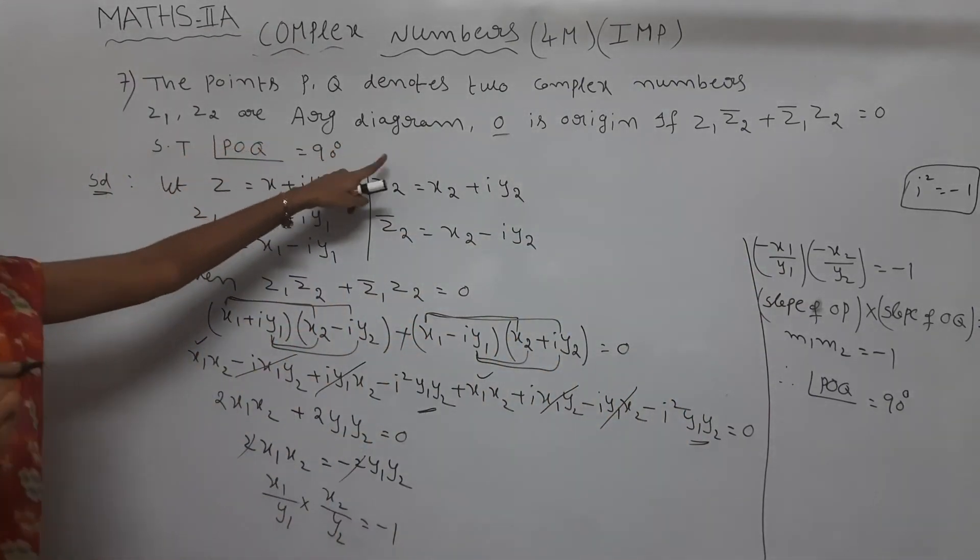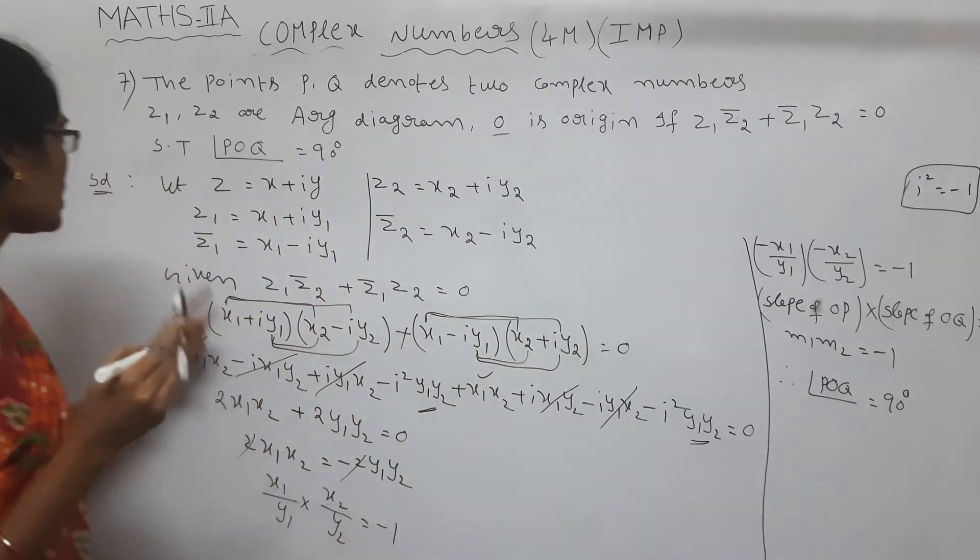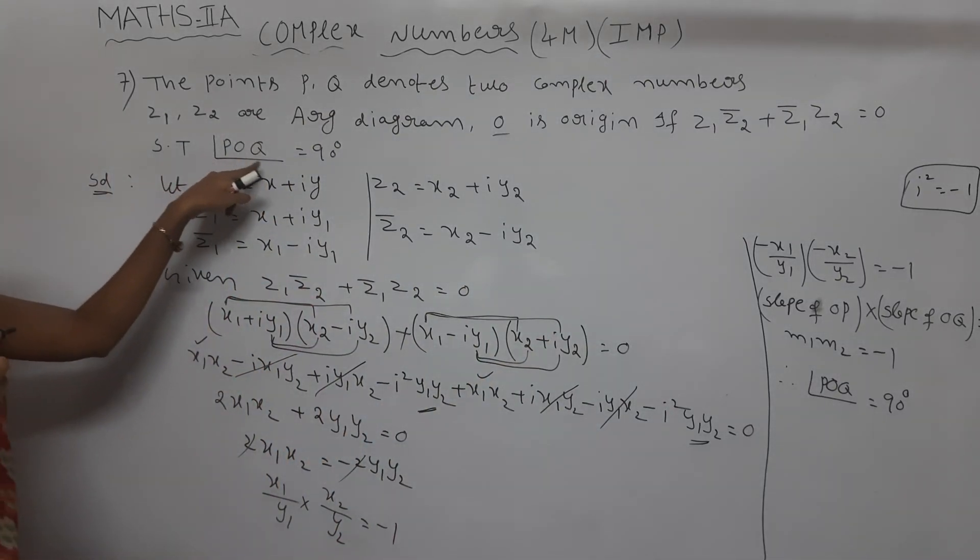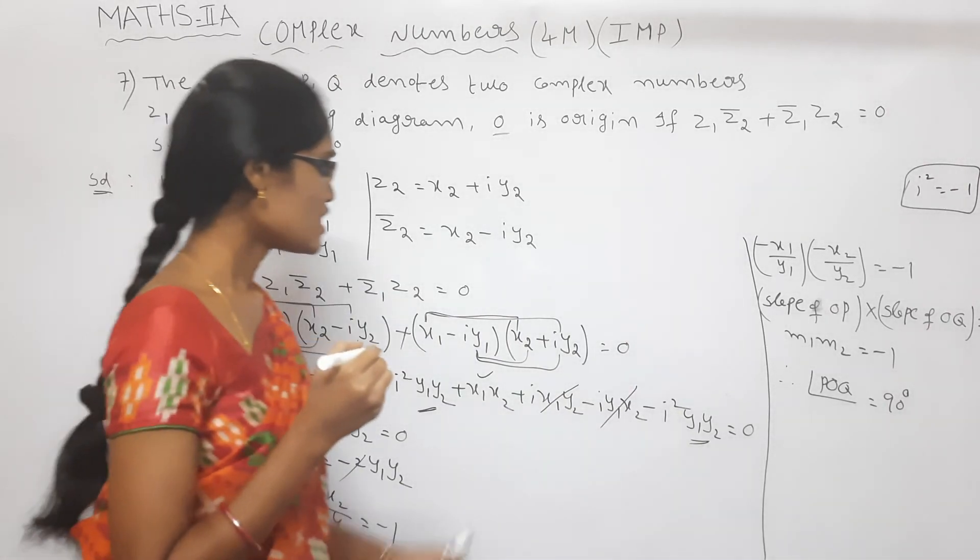Therefore, Z1 and Z2 are on Argand diagram, O is the origin. And if given this condition, we proved that angle POQ is equal to 90 degrees. It's very, very important.